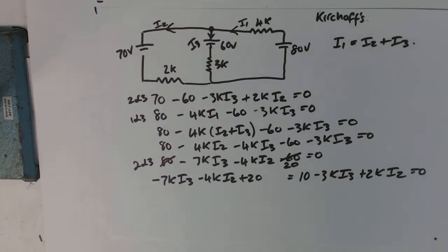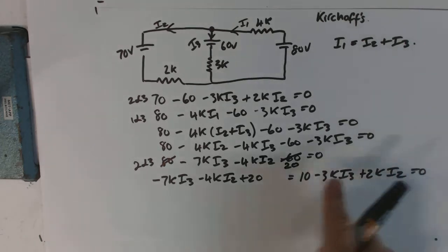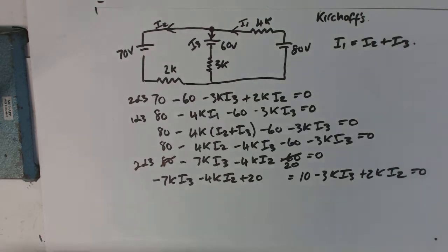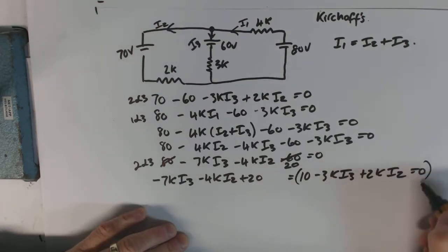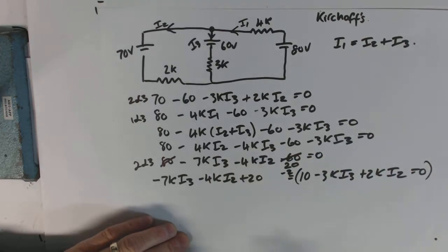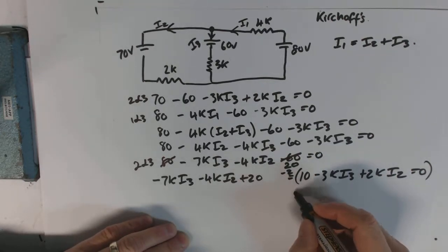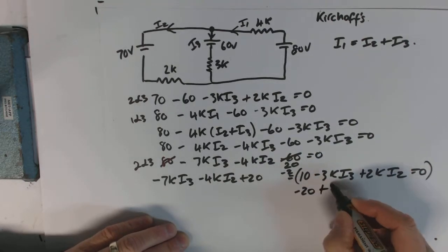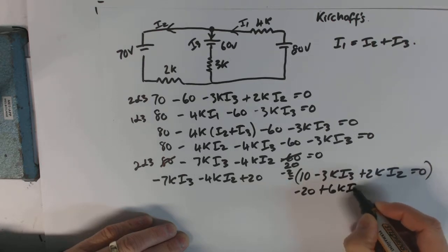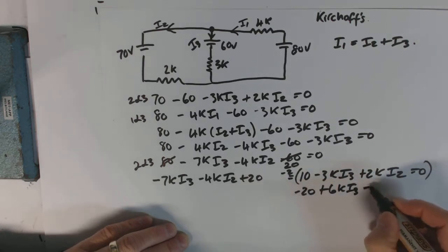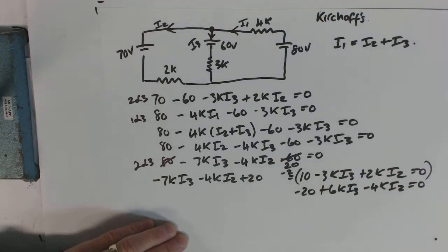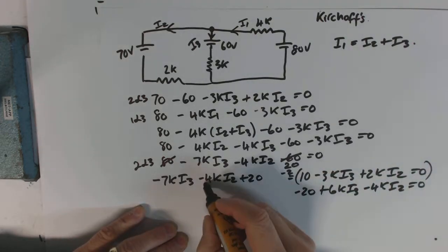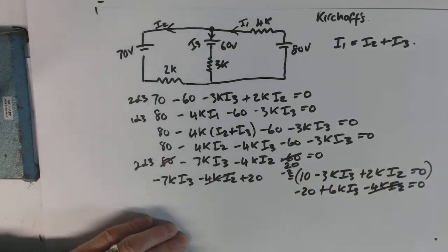Right, so now we've got our equation, we should be able to solve this no problem. But we've got to be able to get rid of some I2s or I3s. I want to get rid of the I2s, so if I multiply this whole equation here by negative 2, we'll get rid of them. So if we do that, we end up with negative 20 plus 6k I3 minus 4k I2 equals zero. All right, now what we've got, we can cancel out the I2s.